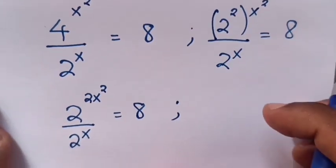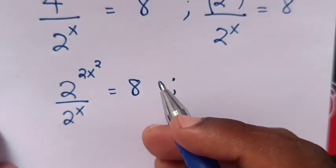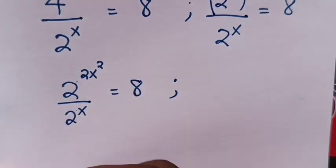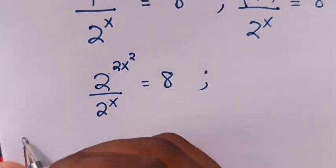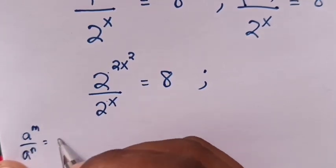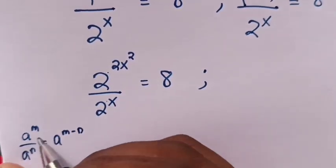Then from the left side of the equation, this is division of exponents with the same base. So we apply the rule that a to the power m over a to the power n equals a to the power m minus n.